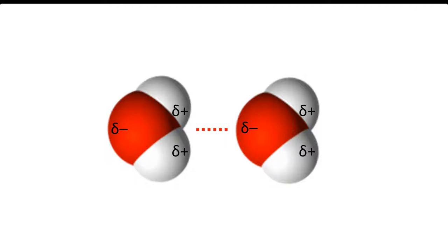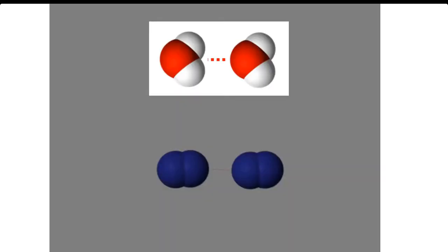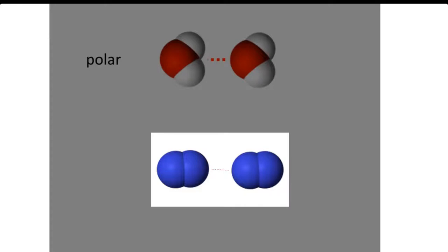The more uneven this distribution of charge in a molecule, the stronger the intermolecular force will be. Some molecules, like water, have a permanently uneven distribution of charge. We call such molecules polar. Other molecules, like nitrogen, do not have this permanent uneven distribution of charge. We call such molecules non-polar.